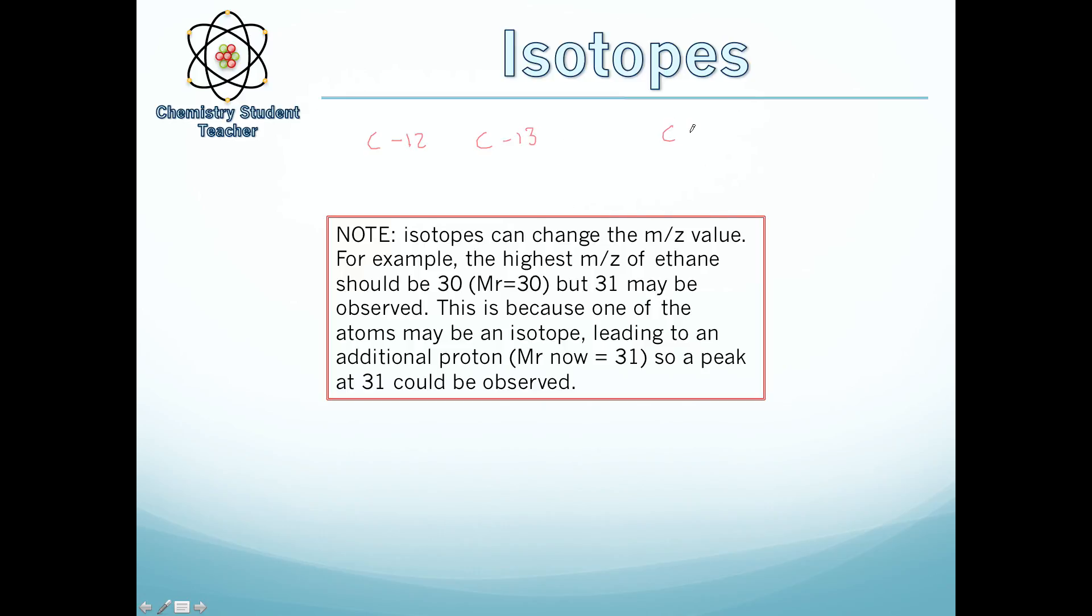Now, if we took ethane, CH3CH3, we'd expect it to have a mass of 30, so 12, 12, 3, 3 makes 30. But, what happens if we've now got an isotope of carbon-13 rather than carbon-12? For carbon-13H3, I'm just going to put a bracket because it doesn't represent that it's 13 carbons, it represents the isotope, and CH3. Now, that means we're suddenly going to have a max peak of 31, because the molecular mass of that is now 31.